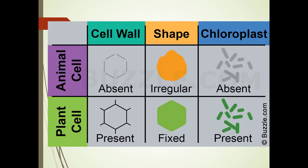Here's a quick graphic to show you the differences. Animal cells do not have cell walls while plant cells do. Shapes in animal cells tend to be irregular. Plant cells are fixed, and there are no chloroplasts in an animal cell, but they are present in plant cells.